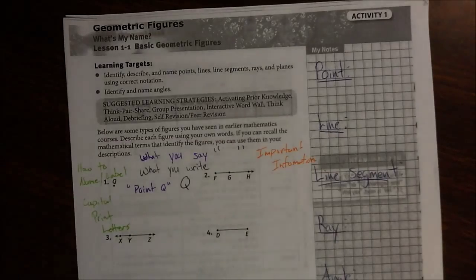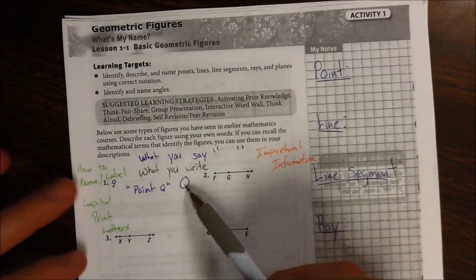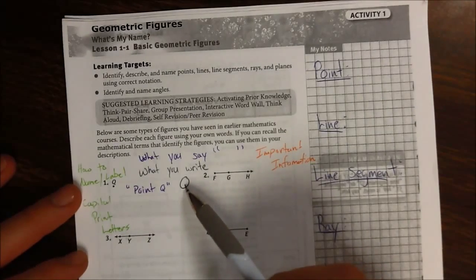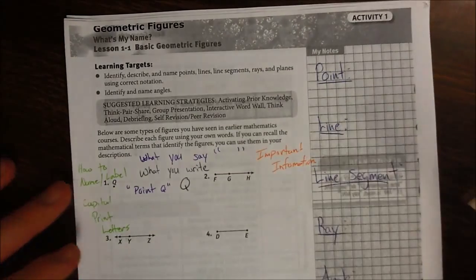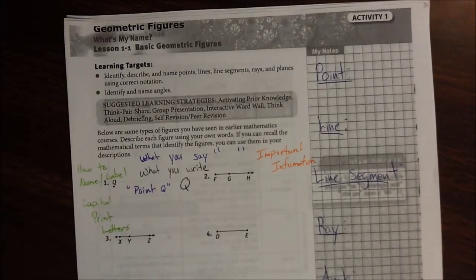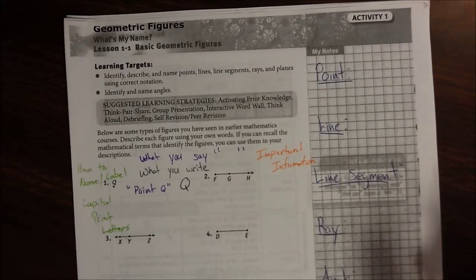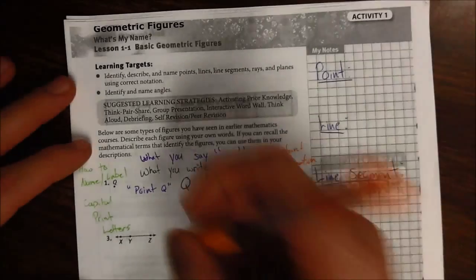If you're writing some mathematical statement and you want to say or write a point, then you simply just put whatever capital letter that is. So whenever you see this, you would read it as point Q. From here on out in geometry class, when you see just a capital letter by itself, you need to refer that to as point and whatever that letter is.